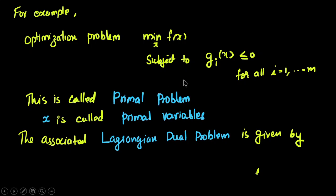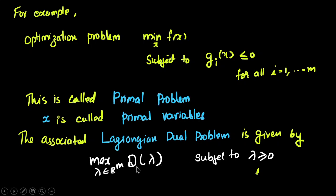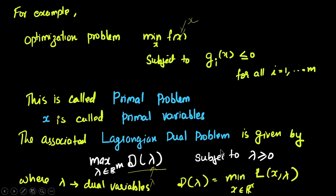The associated Lagrangian dual problem: instead of x, we use the variable lambda. We write the Lagrangian dual problem with capital D — maximize D of lambda subject to lambda greater than or equal to 0. This is a new problem with a different variable lambda replacing the primal variable x. D of lambda equals minimize over x of L(x, lambda), where L(x, lambda) is the unconstrained function for f(x) with the constraints embedded in lambda.